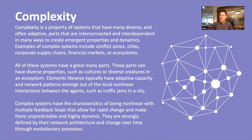Examples of this might include complex zones. If we took something like the Iraq war, we would see many diverse interconnected, interdependent dynamic elements — whether those are the local cultures, the political system, the natural resources, finance, international politics, and so forth. Cities, corporate supply chains, financial markets, or ecosystems are all complex systems, because they have many diverse, interconnected and interdependent elements that are often adaptive in and of themselves.